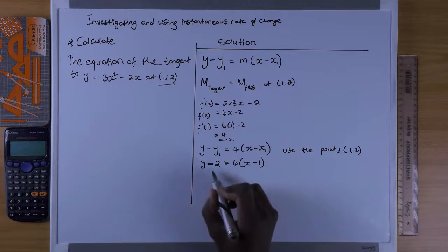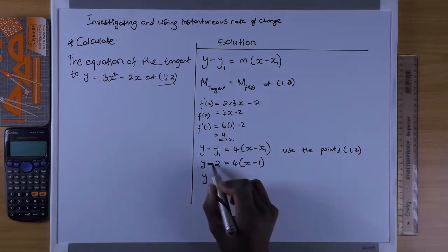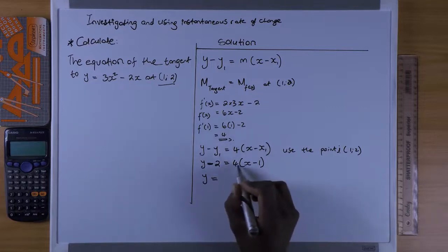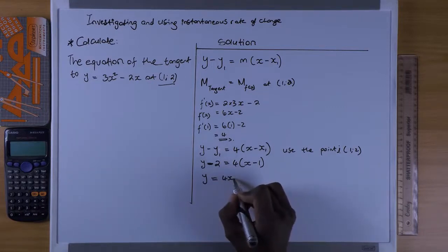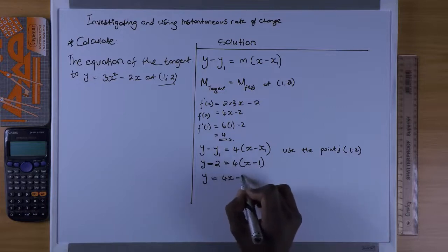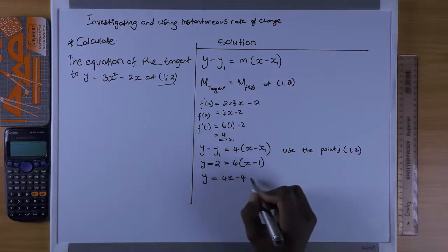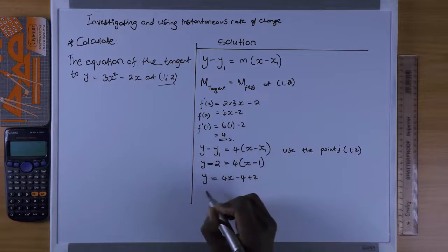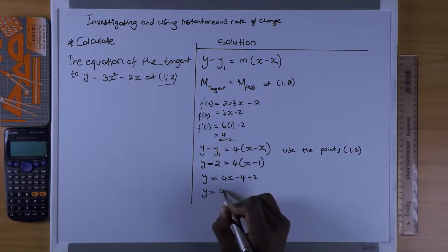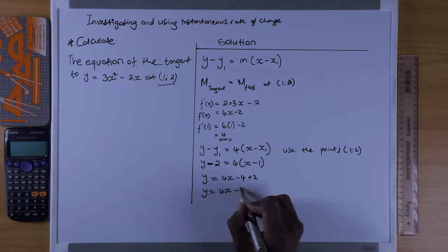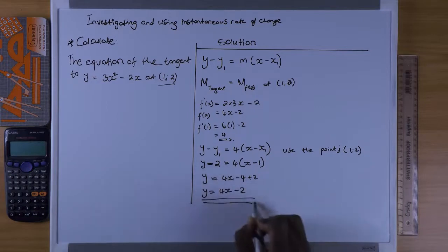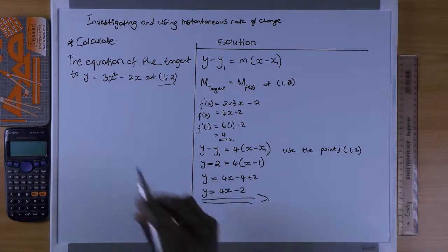Expanding: y = 4x - 4 + 2, which gives us y = 4x - 2. This is the equation of the tangent to the curve at the point (1, 2).